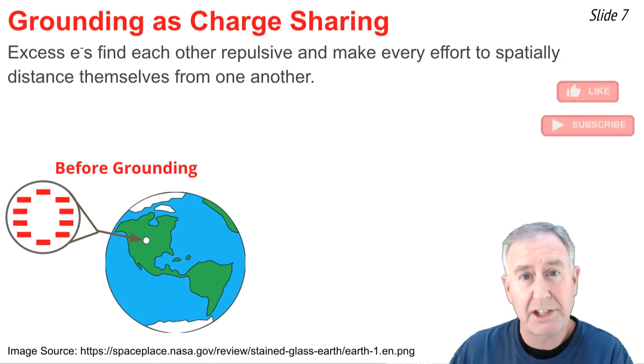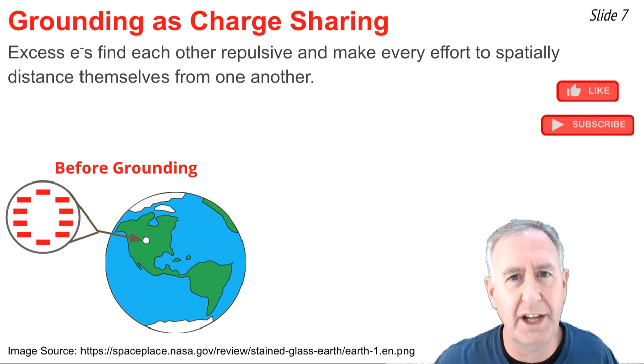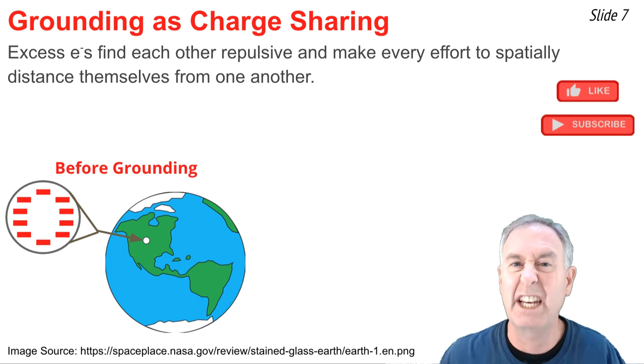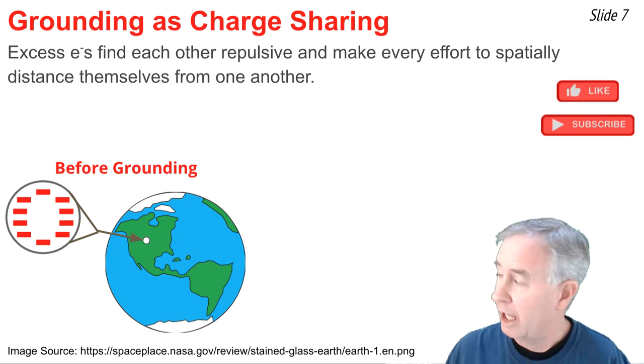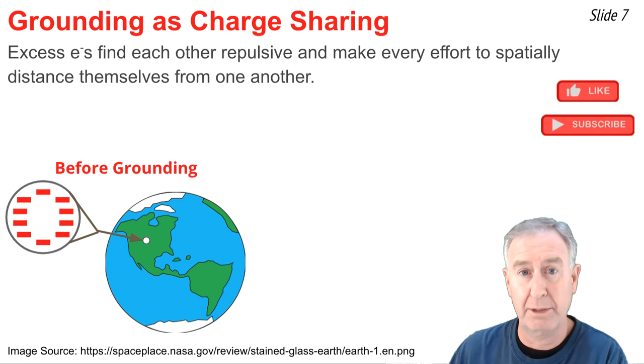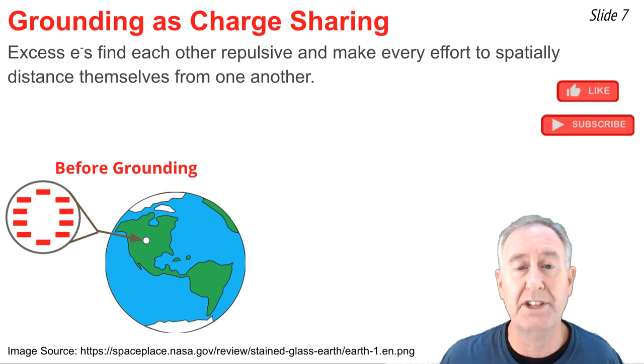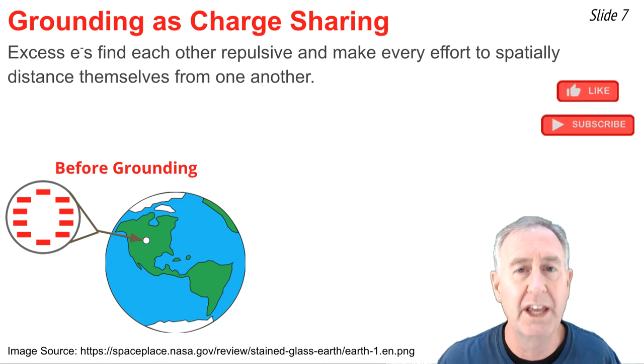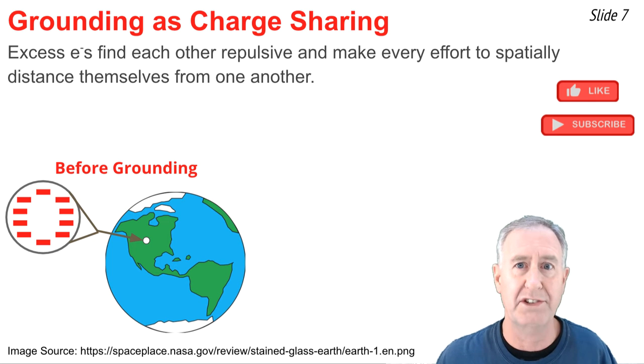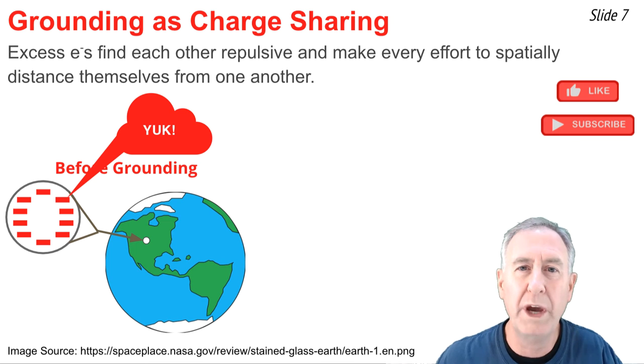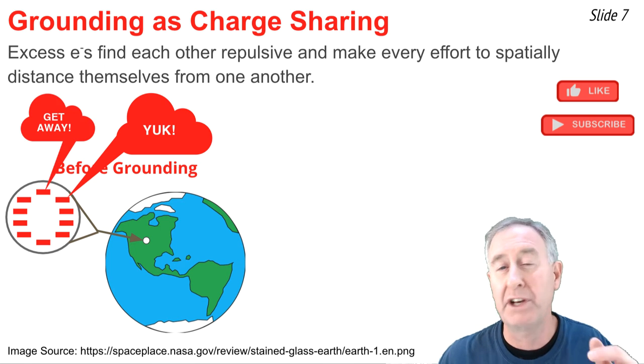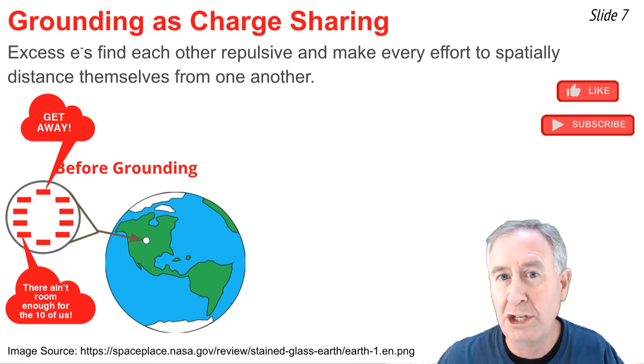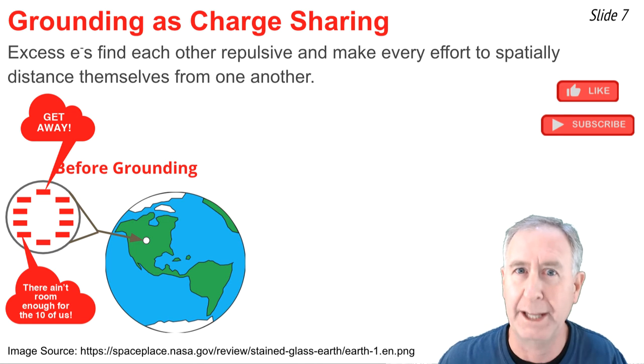Now, this is me standing in the middle of the United States, and next to me is a negatively charged object. As you can see by the diagram, the blown-up view, this object has an excess of negative charge. Now, what we know about excess negative charge, or excess electrons, is they find other excess electrons to be absolutely repulsive. And one way an electron deals with the repulsiveness of another electron is it spatially distanced itself from that electron.